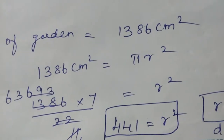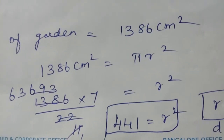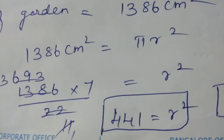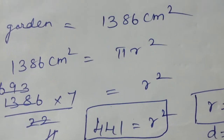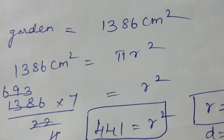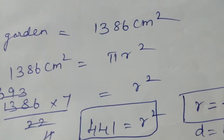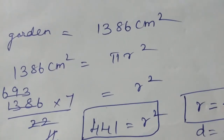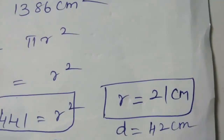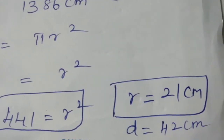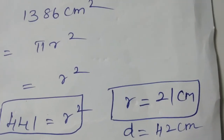Since pi is 22 by 7, moving it gives 7 by 22 on the other side. So 1386 multiplied by 7 by 22 gives r squared equals 441. Therefore r equals the square root of 441, which is 21 centimeters. The diameter is 2 times 21, which equals 42 centimeters.